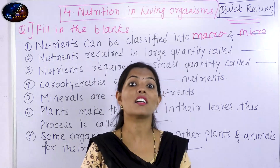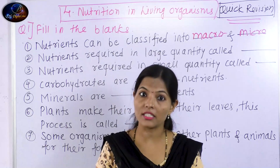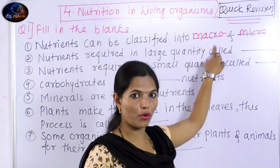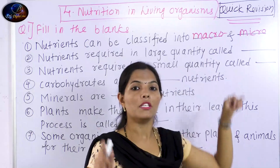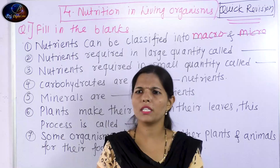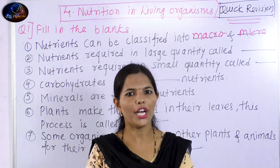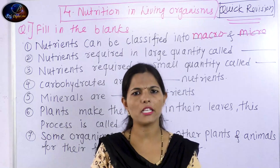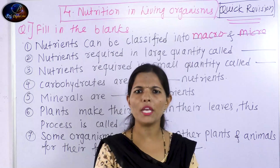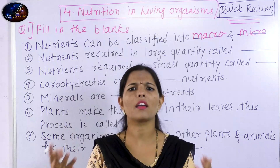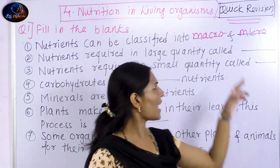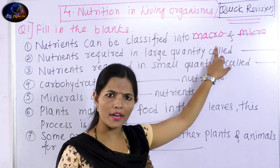If you think about carbohydrates in your body, these are your macronutrients. Examples of carbohydrates include wheat, jowar, bajra, and rice — all these give us carbohydrates.